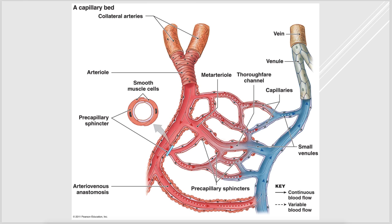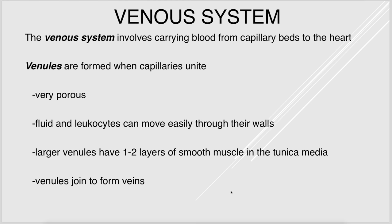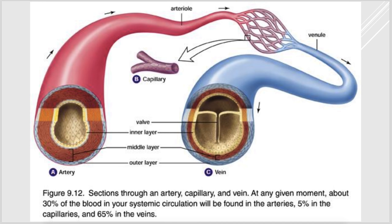Here's the capillary bed: blood comes in at the arterial end, enters the capillary bed, and exchange occurs with tissue cells. The venous side drains the capillary bed. The venous system carries blood to the heart. Venules are basically the first structures that form when capillaries unite — they're very porous, which allows white blood cells and fluid to move through their walls — and these eventually join to form veins.